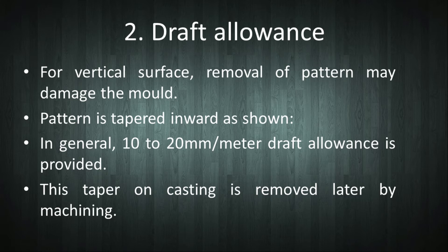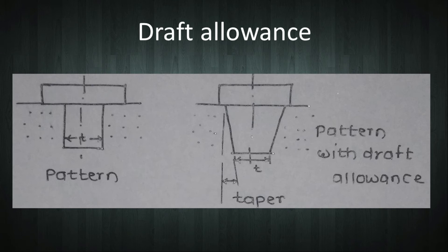The next allowance is draft allowance. For a vertical surface of a pattern, when it is removed, there is a possibility of damaging the sand surface. So to safely remove the pattern, the pattern is tapered inward on the vertical surface. In general, 10 to 20 mm per meter draft allowance is provided. This taper on the casting is removed later by machining.